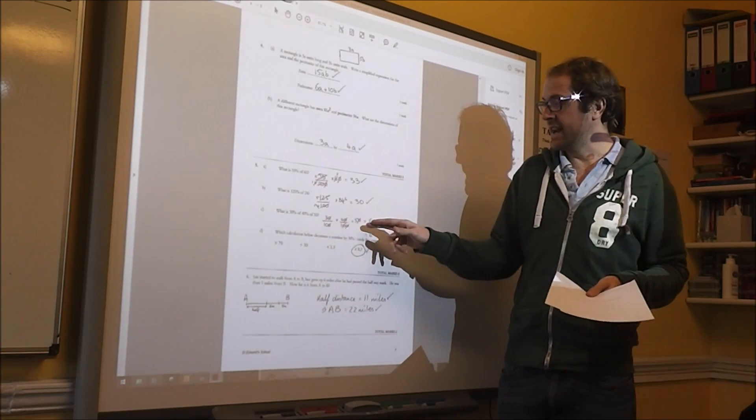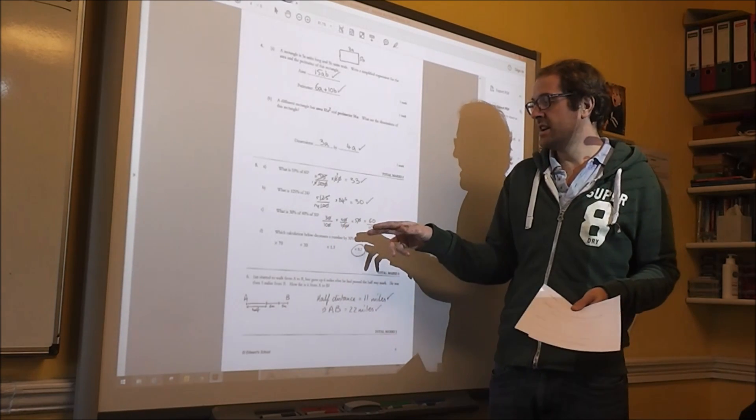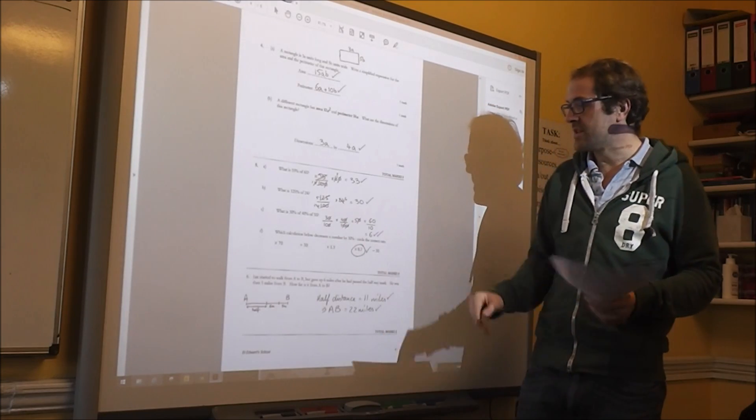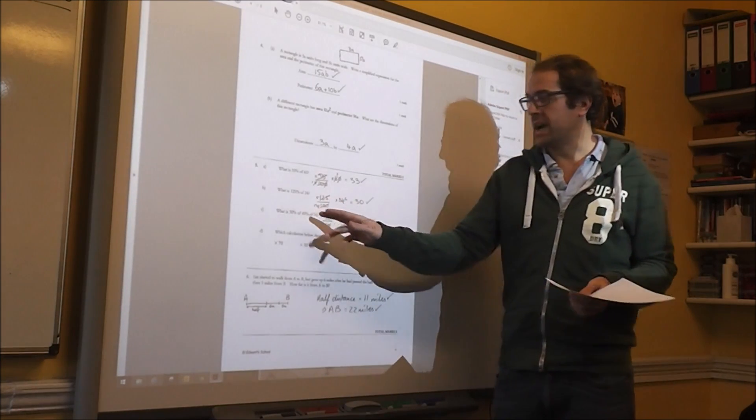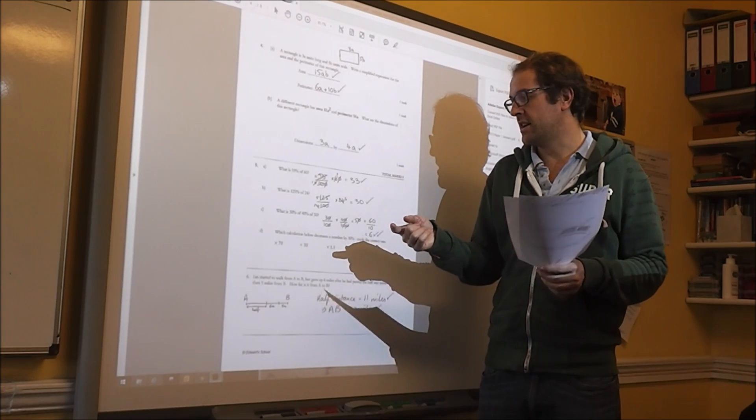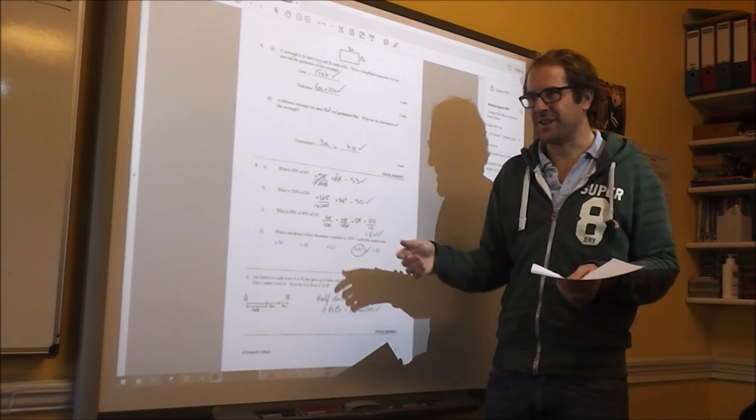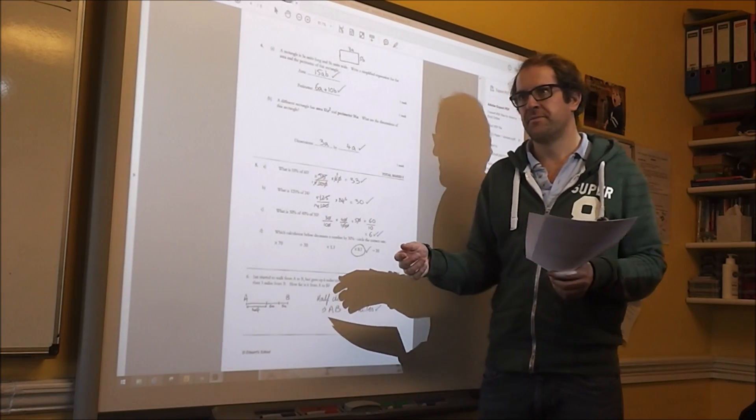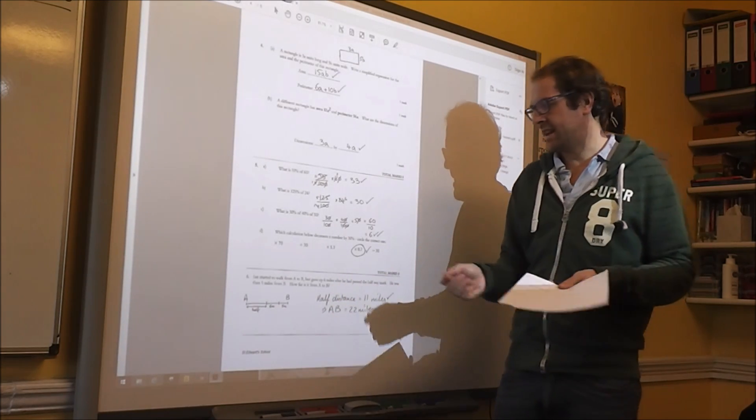And then finally, just write it out. 30%, 40%, 50%. Cross-cancel and you're left is 6. The other way is to work backwards. 40% of 50 is 20. And 30% of 20 is 6. So you can do it that way.